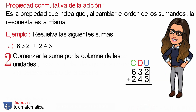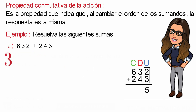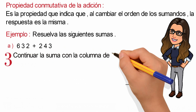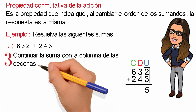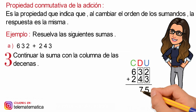Dos más tres es igual a cinco. En tercer lugar, continuar la suma con la columna de las decenas. Tres más cuatro son siete.